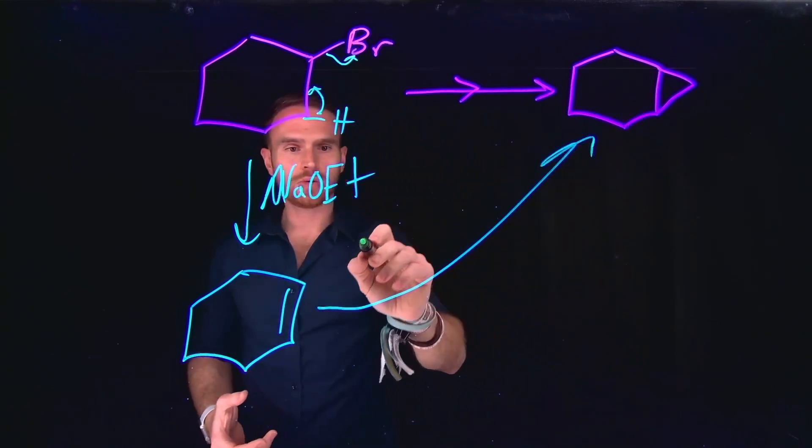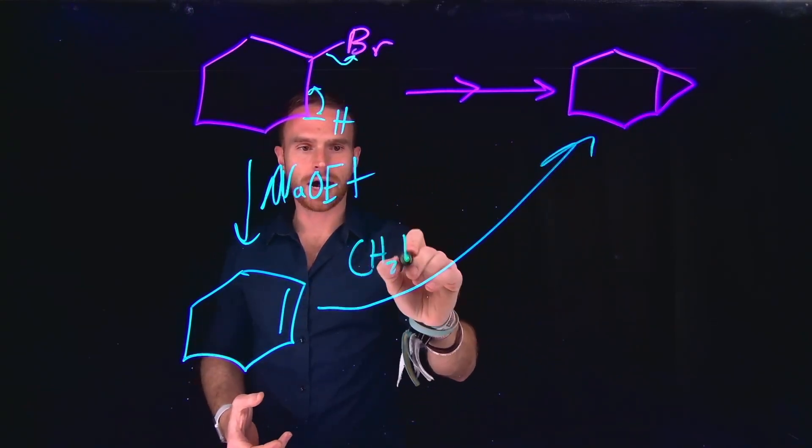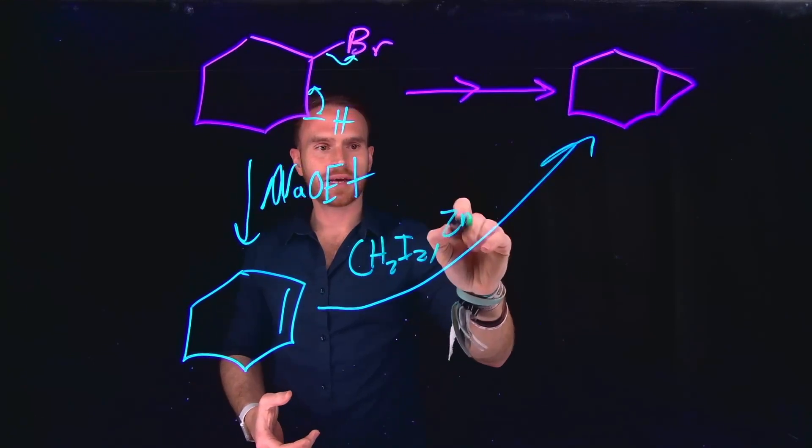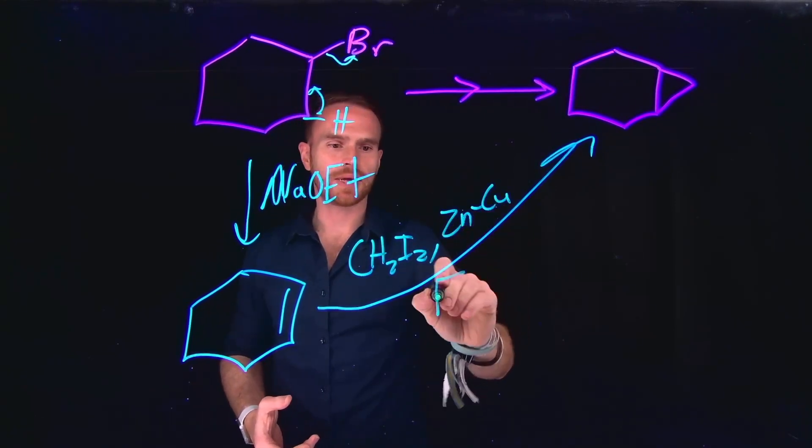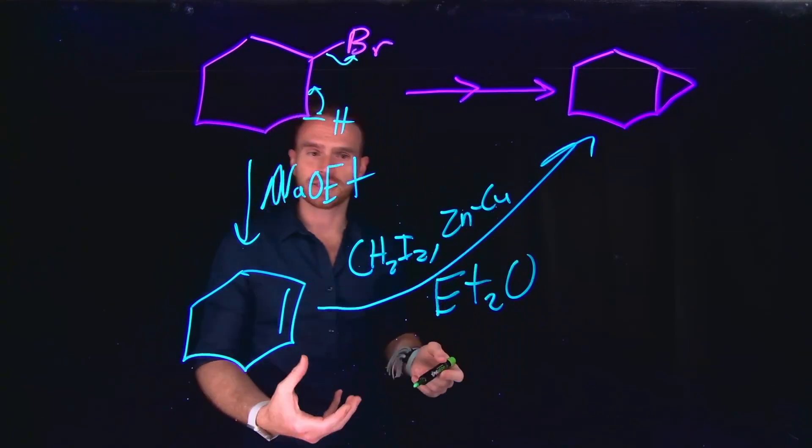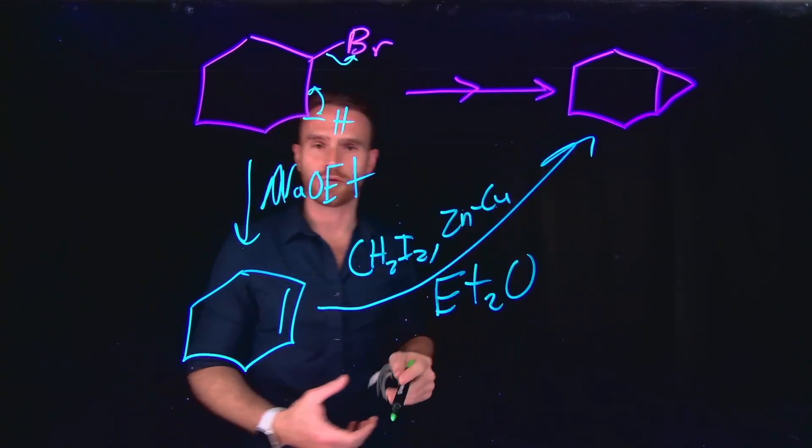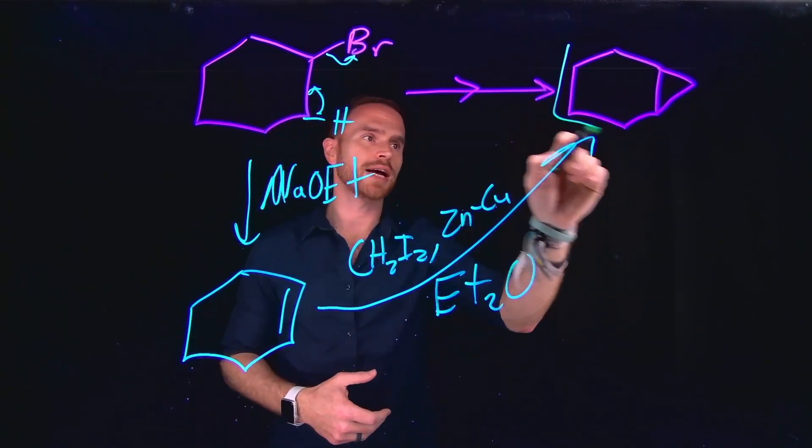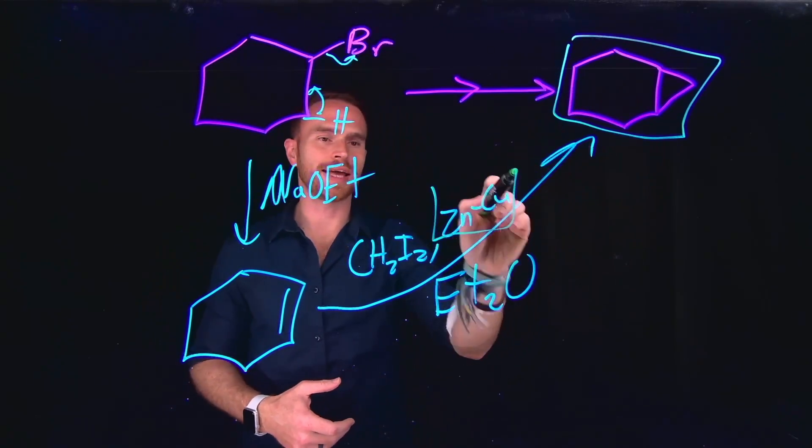all I need to add is my reagent that allows for the cyclopropanation of an alkene. And the reagent that would do that is going to be CH2I2 with zinc and copper in some ether, like diethyl ether, for example. And again, we covered this in this video. This is called the Simmons-Smith reaction, where you form new cyclopropyl rings using these organozinc reagents.